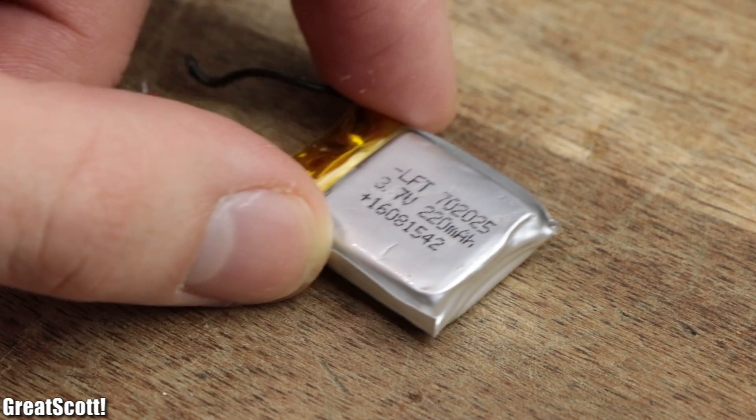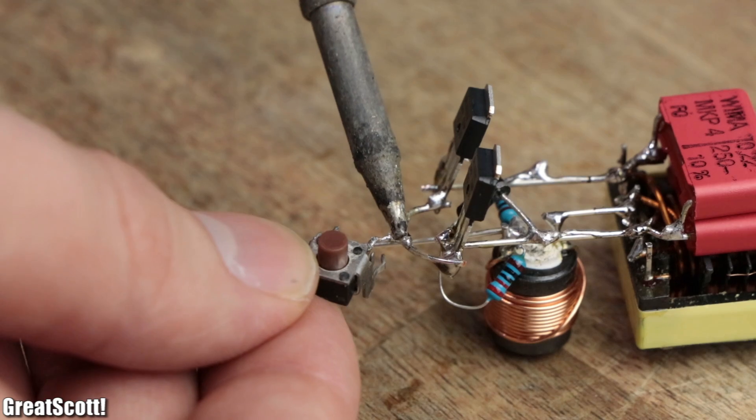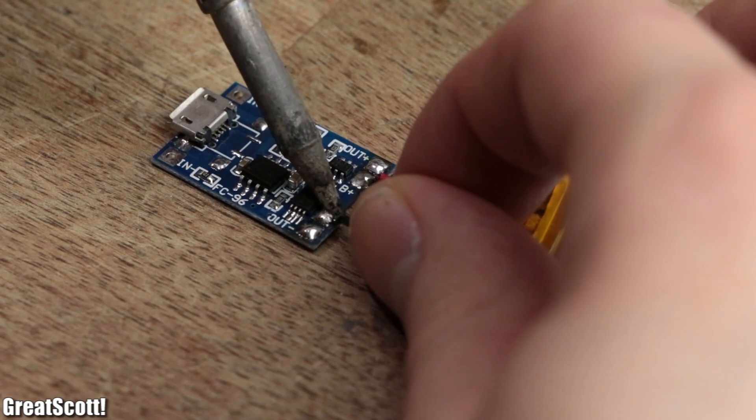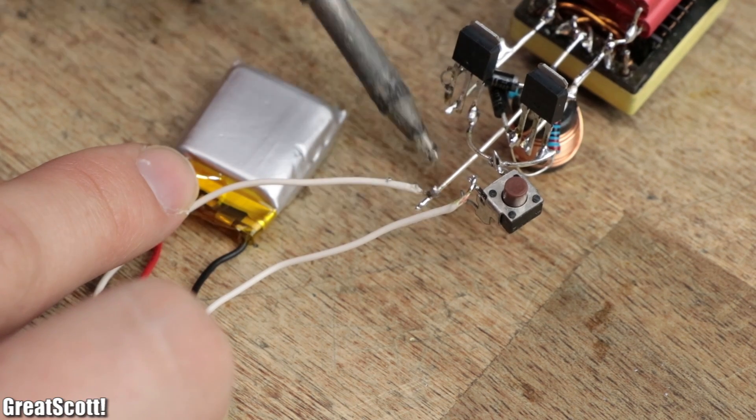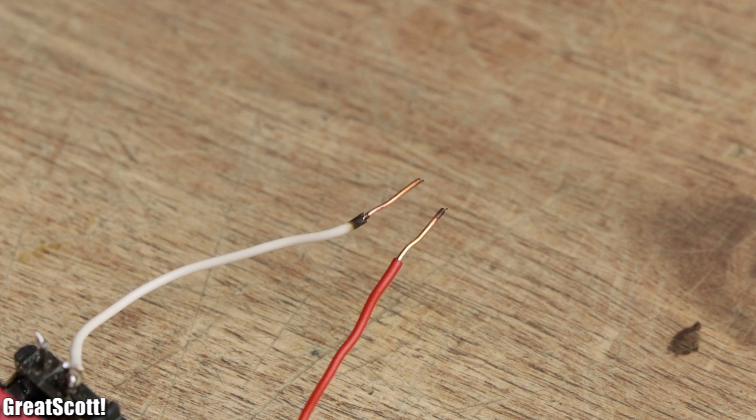Thankfully though, I had a fitting replacement battery that could supply such currents. And after adding a push button and a TP4056 charging and protection board to the circuit, it was supposed to work fine, but it didn't. The problem was the overcurrent protection of the board, which interrupts the current flow after a couple of milliseconds.